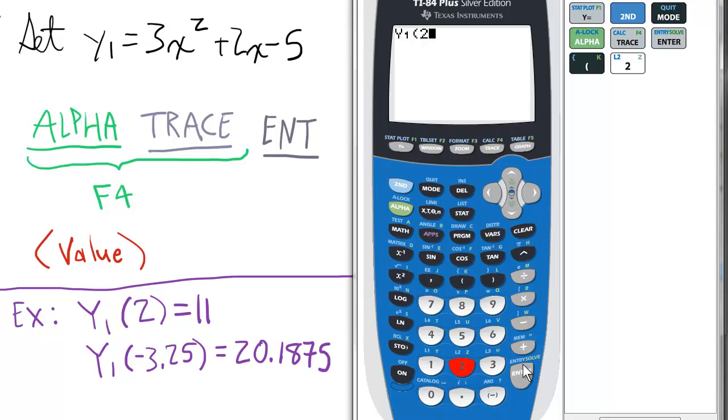First, we'll press 2. So f of 2, f meaning the Y1 function, is 11. You might think to yourself, okay, I can find this in a table and change my table settings. Yes, you can. But say you want a particular non-integer value - it might be easier to do this.